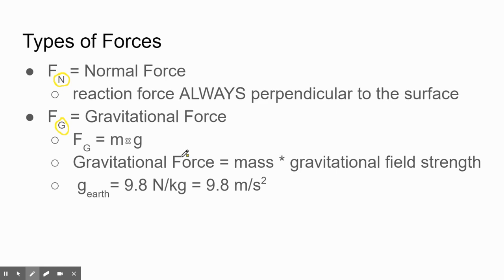FG is gravitational force. That's equal to your mass times the gravitational field strength. On Earth, the gravitational field strength is 9.8.